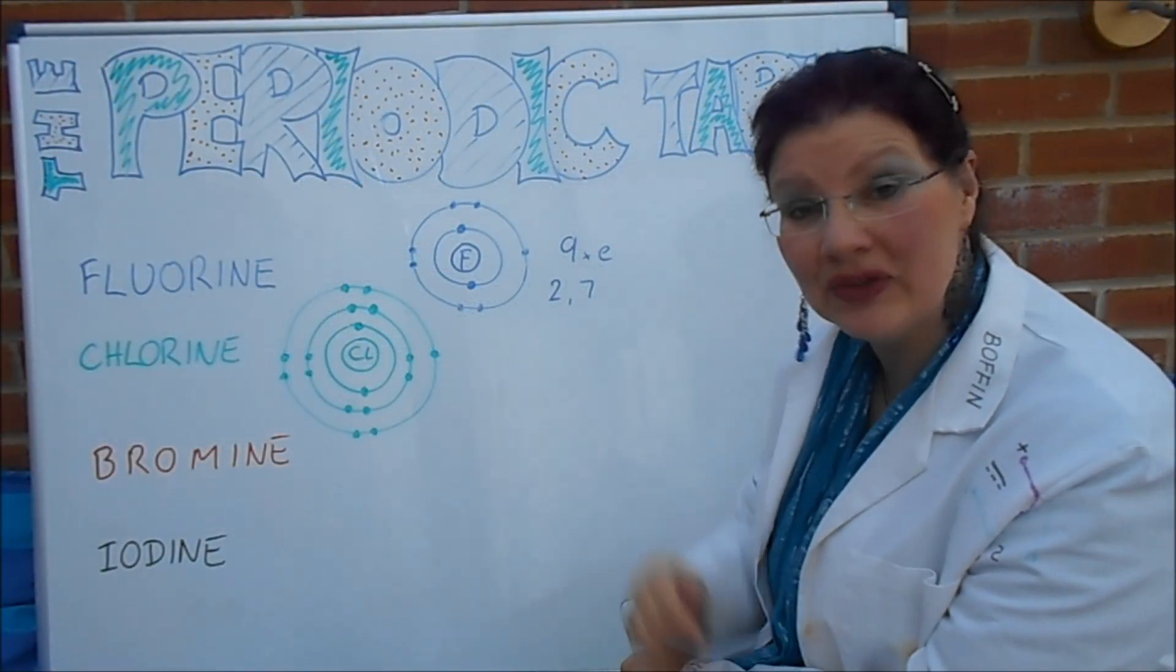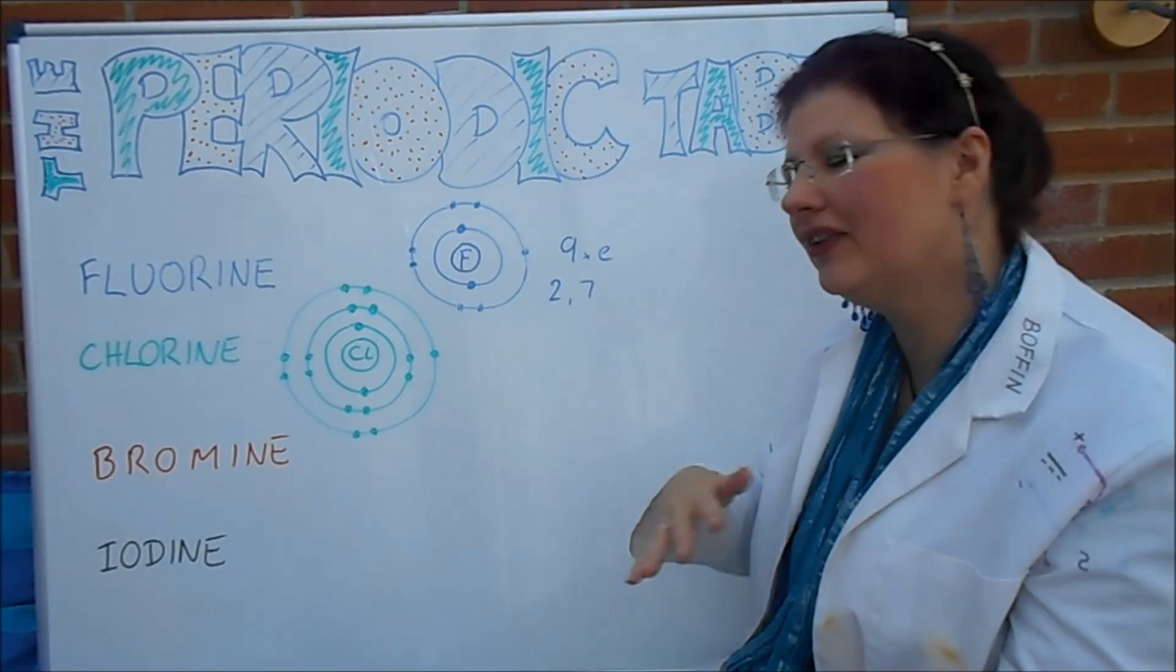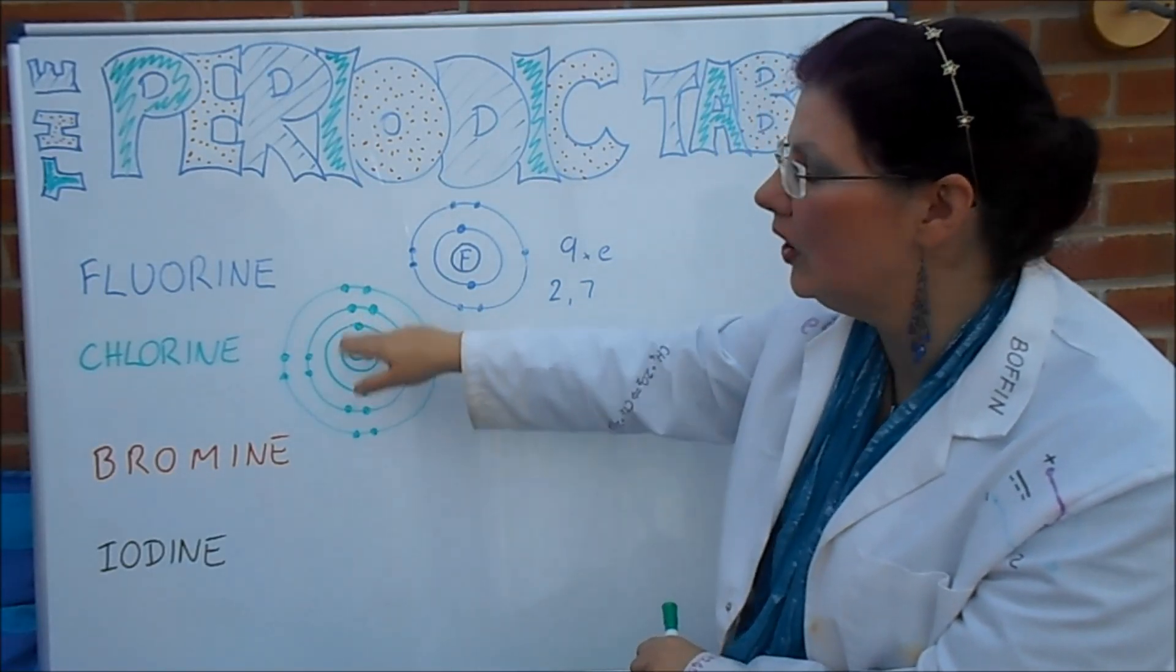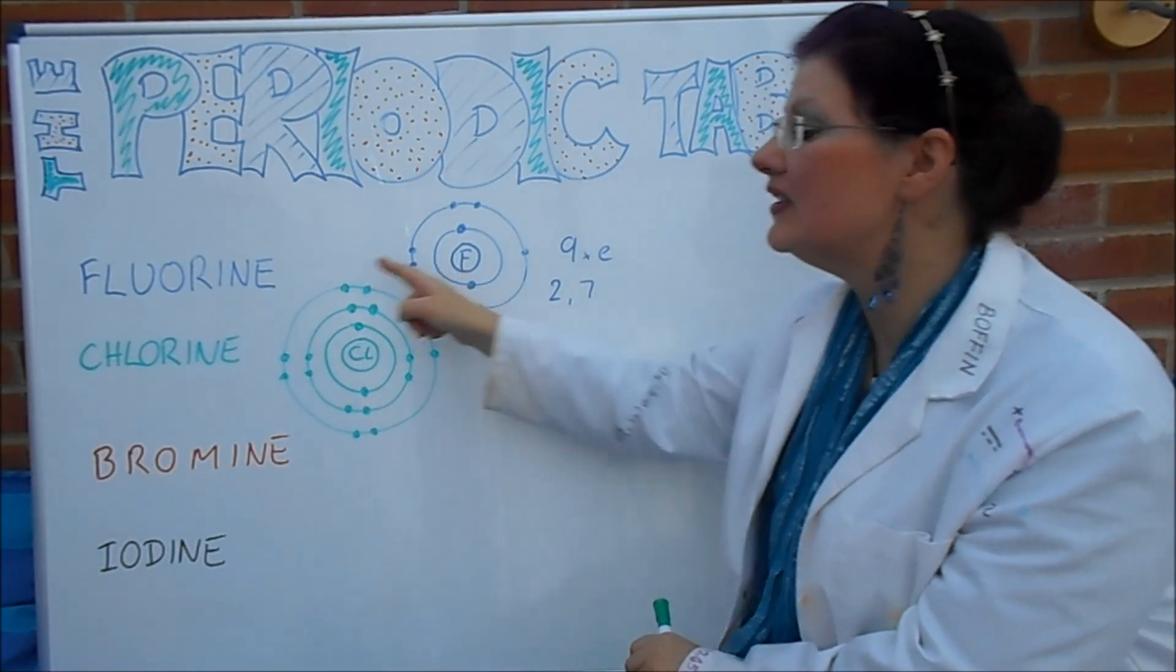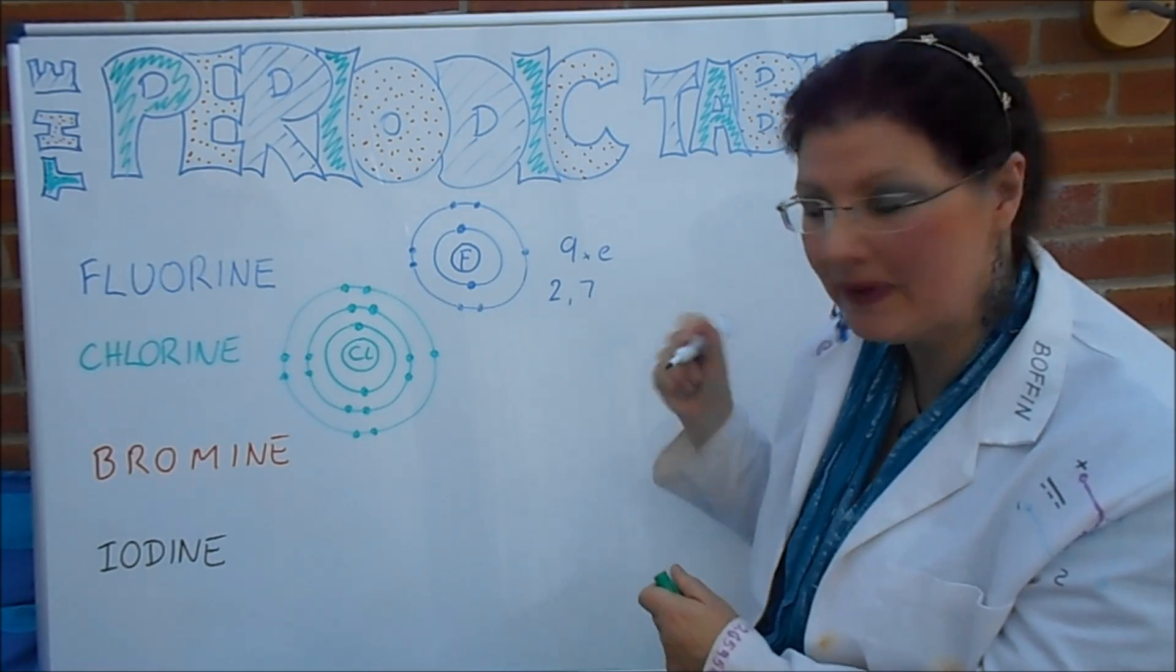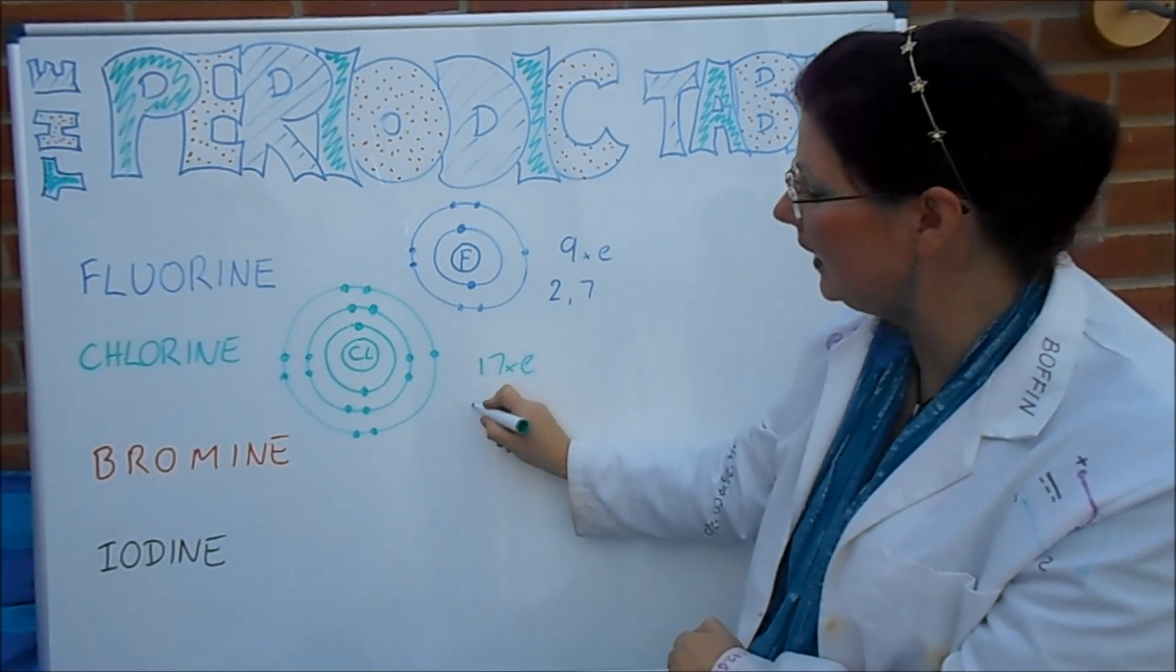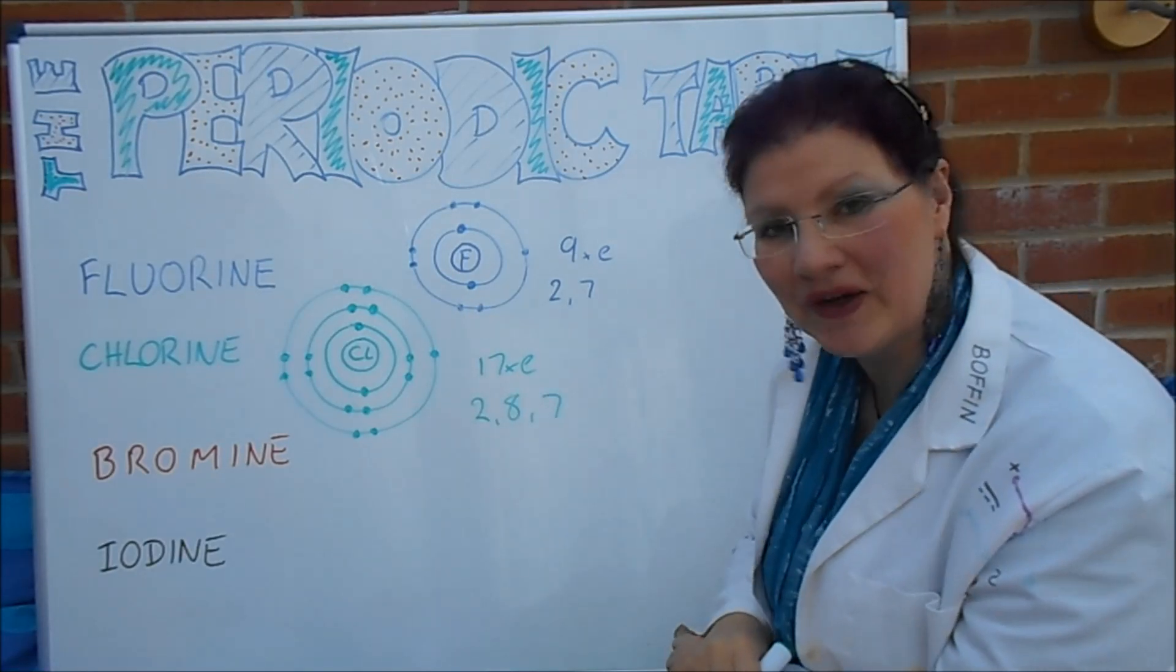You should have something that looks like this. Now I've drawn my electrons in pairs. It doesn't matter if you haven't done that. That's kind of further on. They do tend to hang around in pairs. But you should have two on the inner ring, eight on the next ring out, and then seven on the ring beyond that. So for 17 electrons, 17e, we have a 2, 8, 7 arrangement.